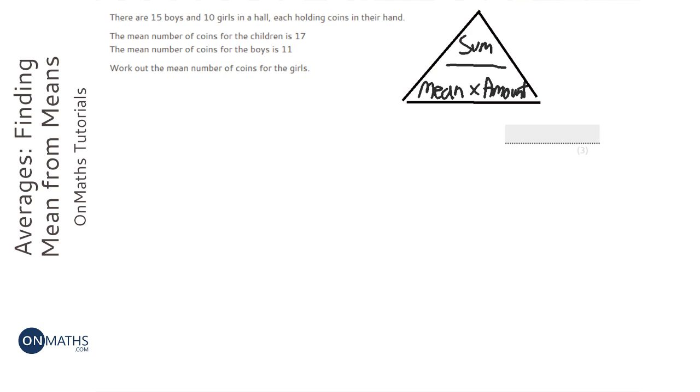So, with that in mind, we can work out the total, or the sum, of the boys. So the mean of the boys is 11, and the amount of the boys is 15.